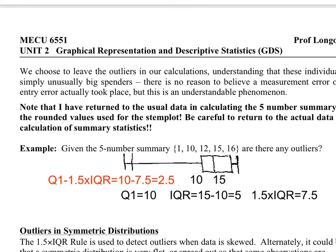So 1 would be one of those outliers. The value 1 is an observation, but because I don't see all the observations, I don't know what other ones there might be. So the answer is yes, there are outliers.